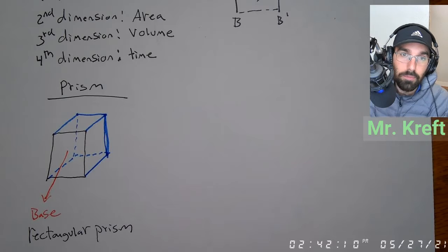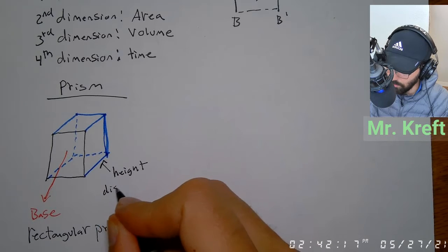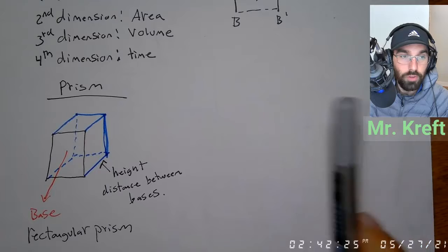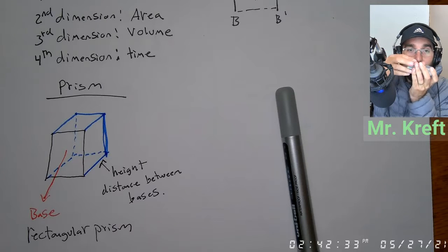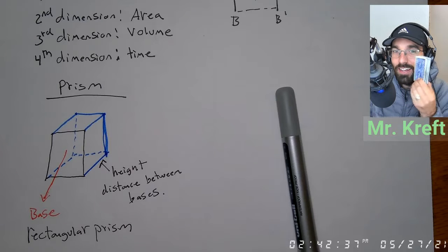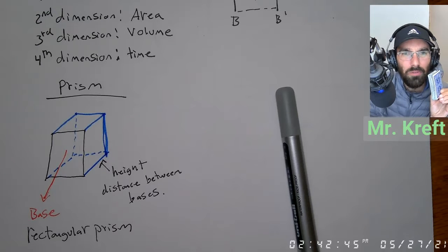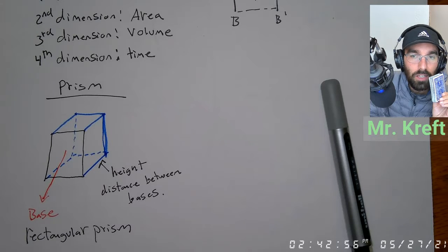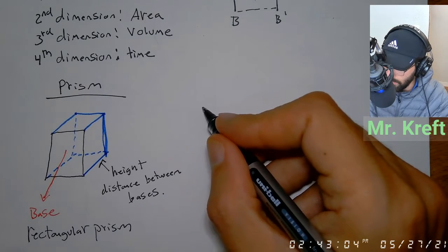Let's draw a prism with a right triangle as its base using the same method: draw the triangle, then add parallel lines back from each vertex and connect them. This is called a triangular prism. The height in volume is the distance between the bases, not the height of the triangle — that can be confusing, so make sure to keep those separate.